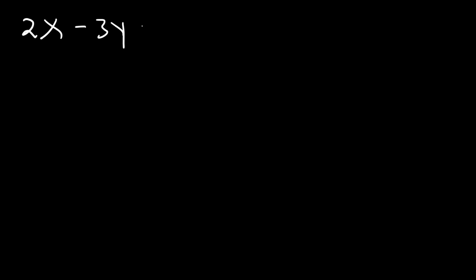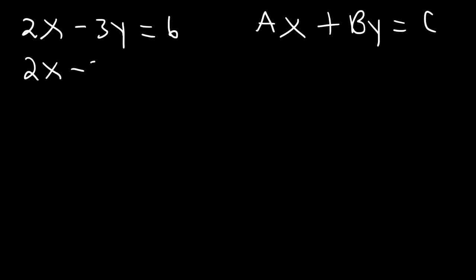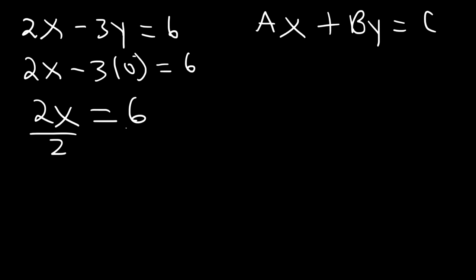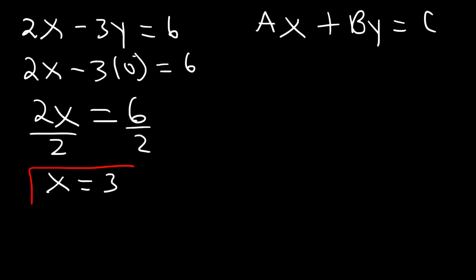Sometimes you might be given a linear equation in standard form — that is, in ax plus by equals c form. Go ahead and find the x and y-intercepts. To find the x-intercept, replace y with 0. Three times 0 is 0, so that portion disappears, leaving 2x equals 6. Divide both sides by 2: 6 divided by 2 is 3. Therefore, the x-intercept is the ordered pair (3, 0).